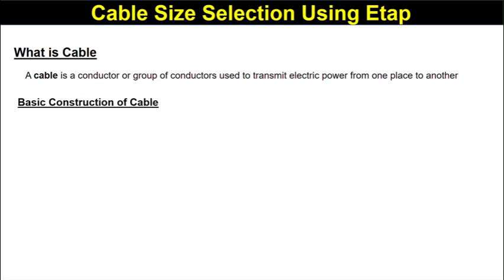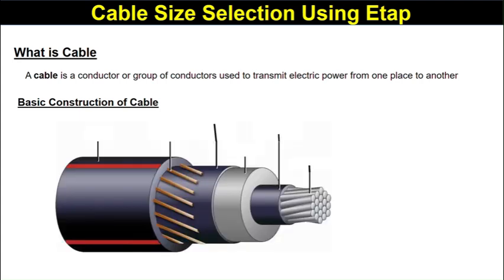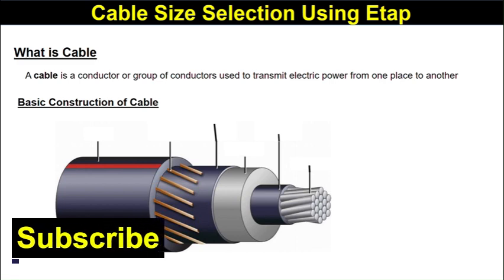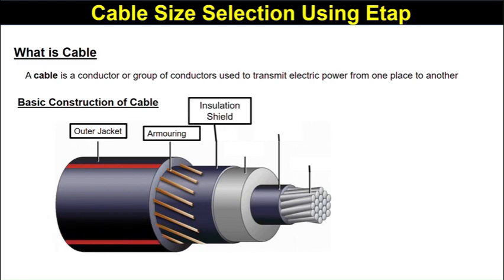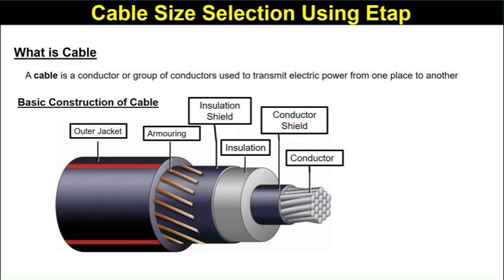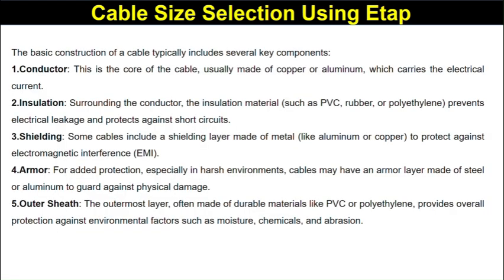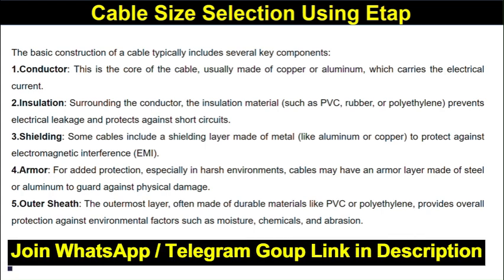The basic construction of the cable can be seen from this cross section. This is the outer jacket, this is the armoring, this is the insulation sheet, this is the insulation, this is the conductor shield, and this is the conductor. The basic construction of a cable typically includes several components — the conductor is the core of the cable, usually made of copper or aluminum, which carries the electrical current.